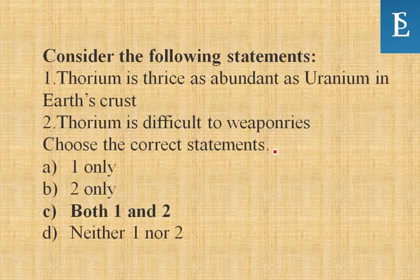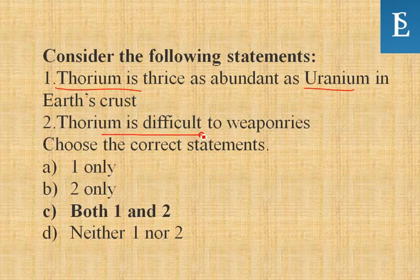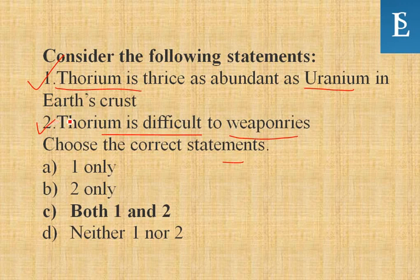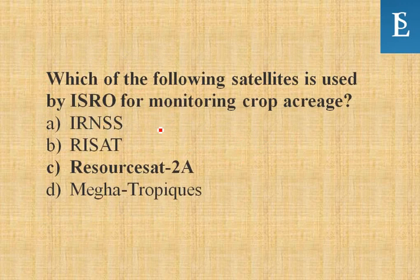Consider the following statements about thorium: statement one — thorium is thrice as abundant as uranium in Earth's crust; statement two — thorium is difficult to fissionize because to use thorium you have to use it in a fast breeder reactor, which is a difficult process. Both statements one and two are correct.